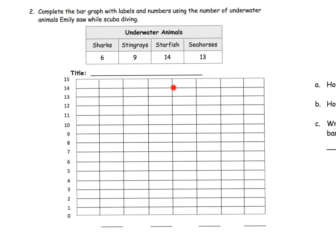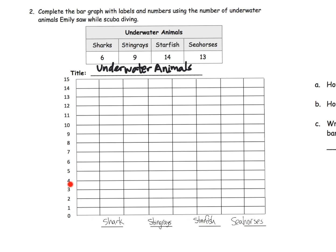And here is the same concept, only this time it is a vertical bar graph. I'm going to pause the video and fill in all of our information. So here it is — the title is Underwater Animals. We've got four different categories: sharks, stingrays, starfish, and seahorses. And now you see the side legend going up by ones.